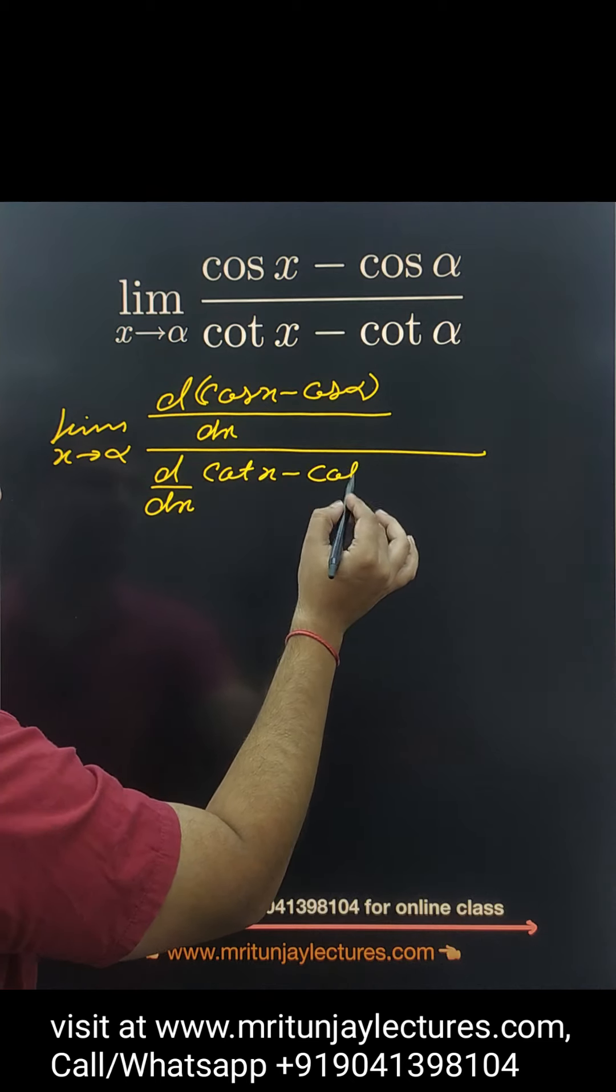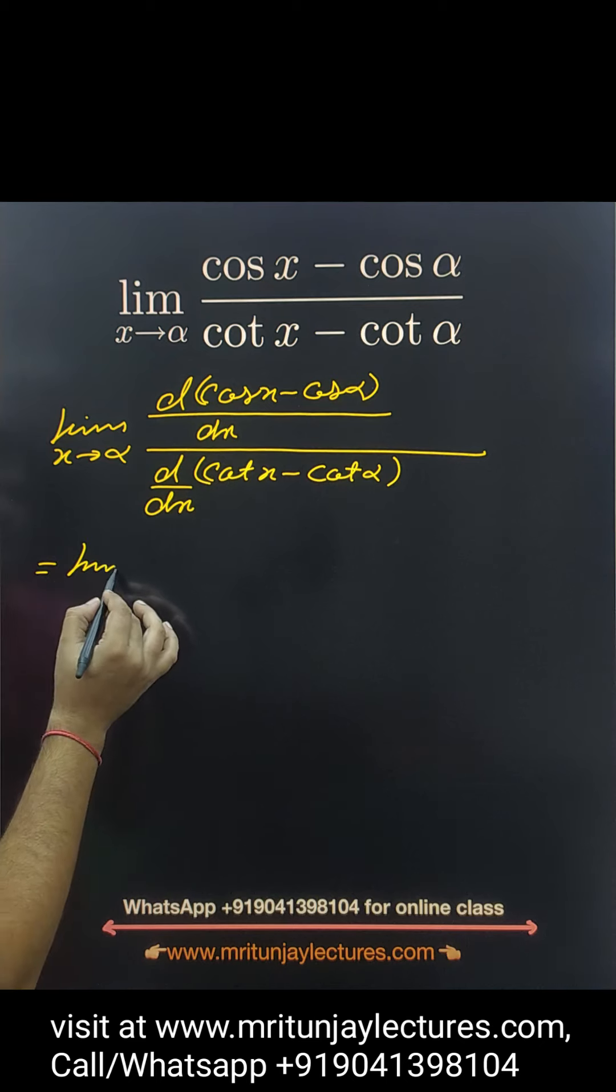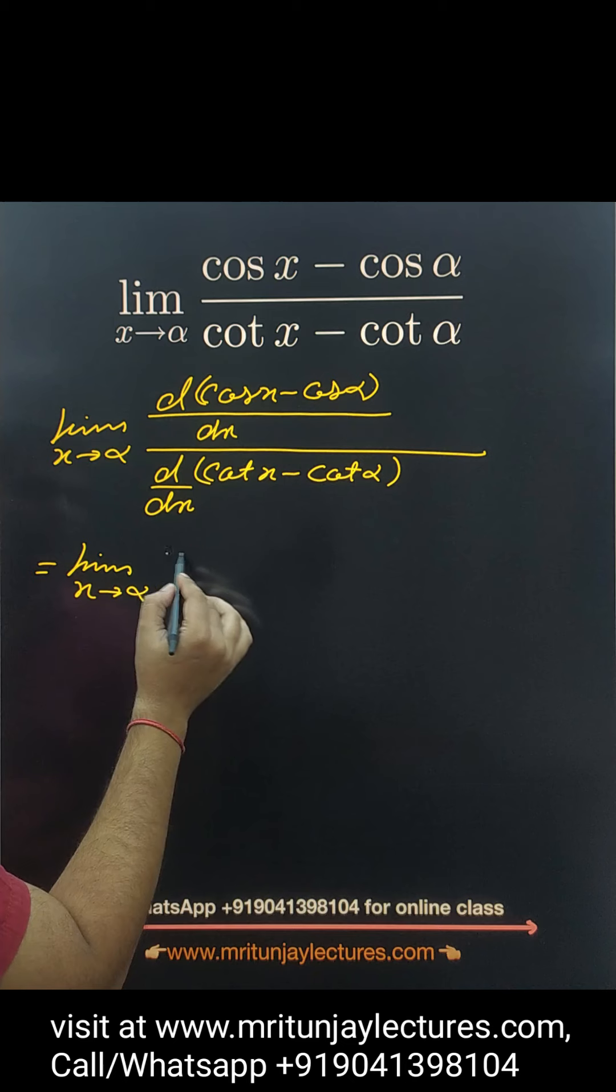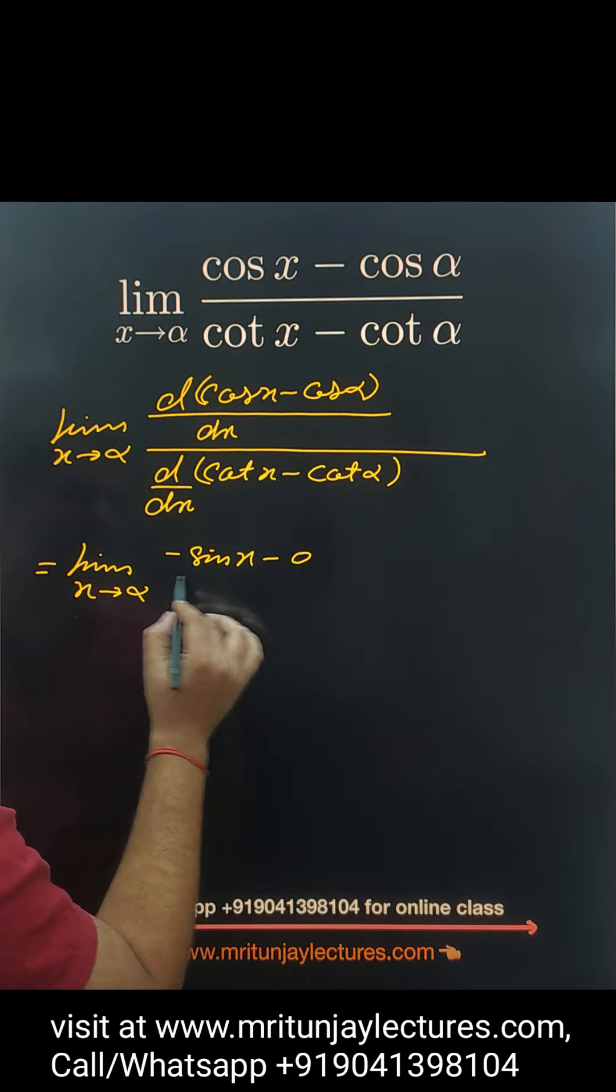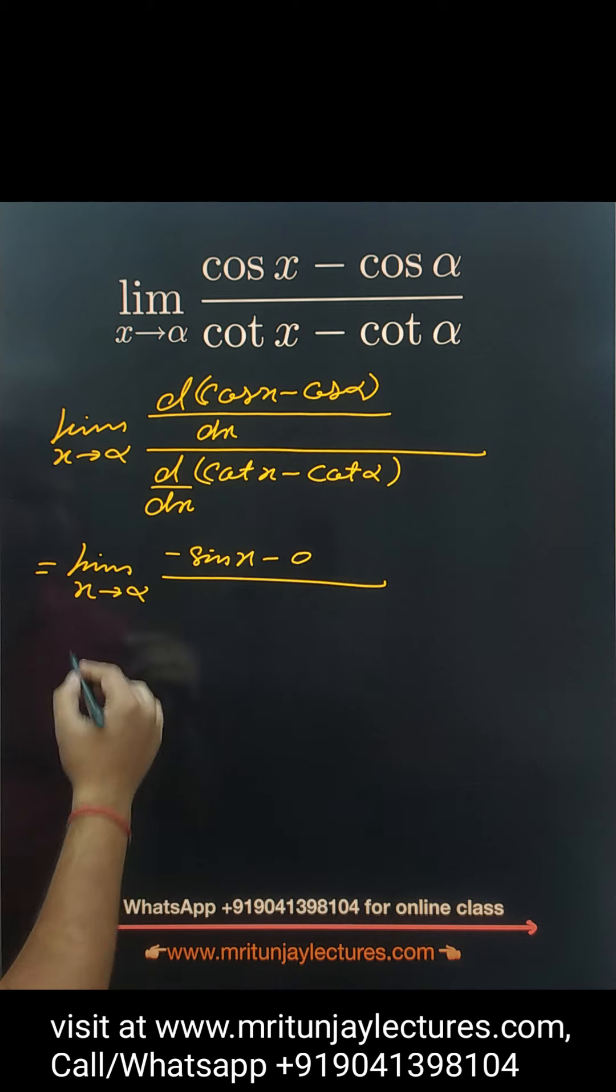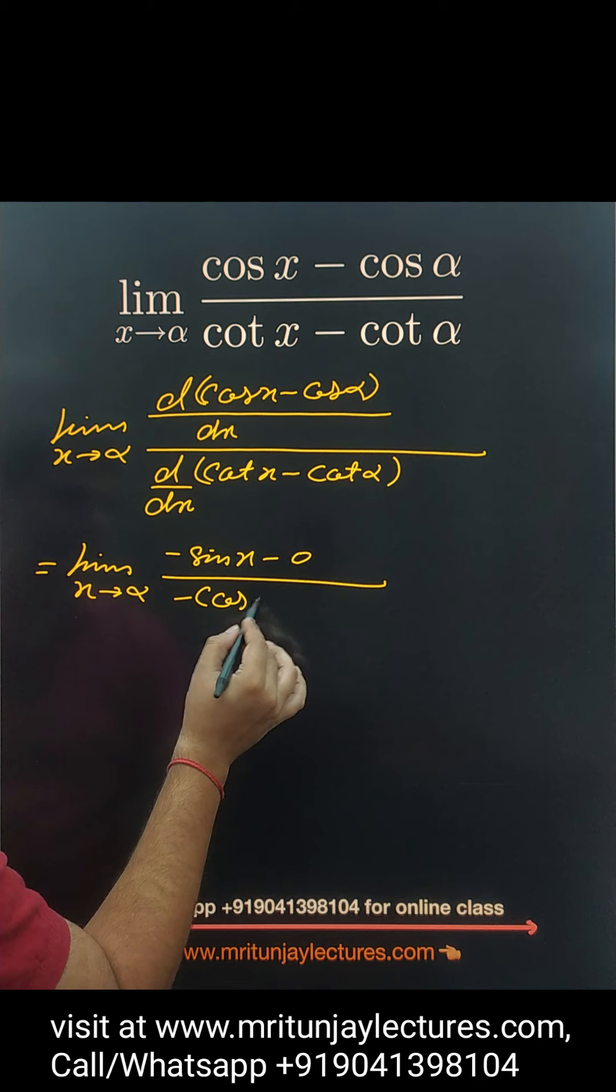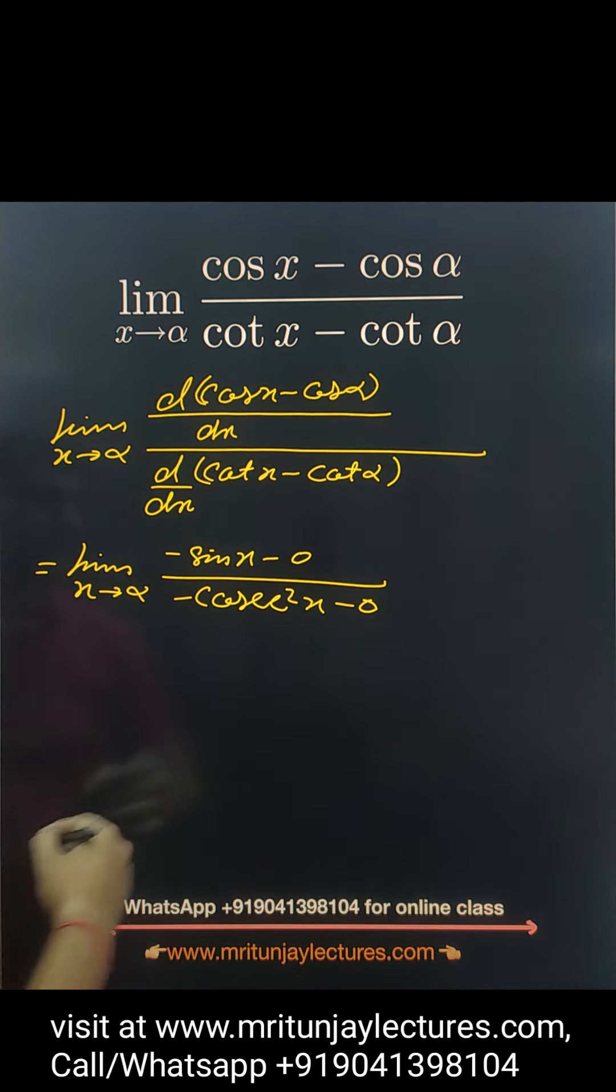Limit x tends to alpha. Cos x differentiates to minus sine x, and that is 0, divided by differentiation of cot x, that is minus cosecant squared x, and that is 0.